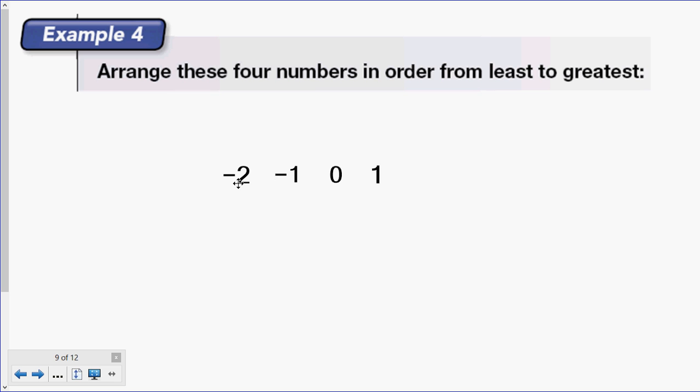This negative two is the smallest number here. One is the greatest number. We're going to go in and fill in commas so it doesn't look like some weird random number. And that is our answer. Negative two, negative one, zero, and one.